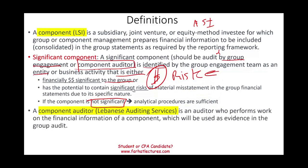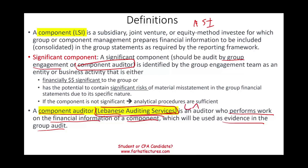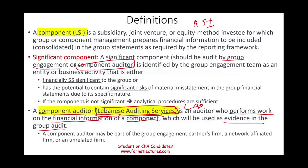What is a component auditor? A significant component must be audited by the main auditor or a component auditor. It's the audit firm that I'm going to be contacting in Lebanon and asking them to audit this company — we're going to call it Lebanese Auditing Services, LAS. It's an auditor who performs work on the financial information of the component, which will be used as evidence in the group audit. A component auditor may be part of the group engagement partner's firm — for example, PWC would have an office in Lebanon — it could be a network-affiliated firm, or it could be an unrelated firm. In this example, I'm going to assume LAS is an unrelated firm.